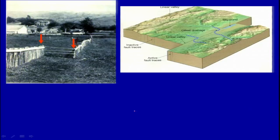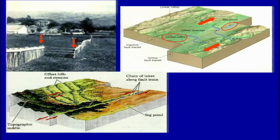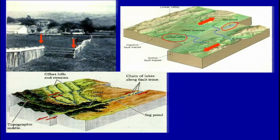Another feature you will see is the formation of sag ponds. The displacement creates a very linear feature on the earth's surface, and a very linear valley is formed along such faults. Similarly, where there are hilly regions or ridges, they will also get offset. So you will see the offset of hill ranges as well as streams on the surface.